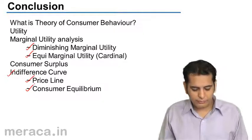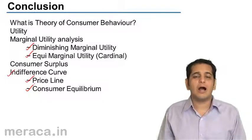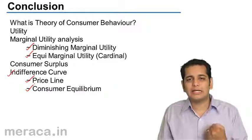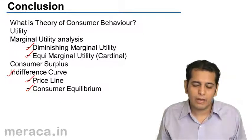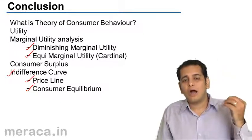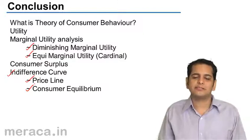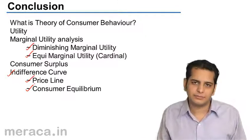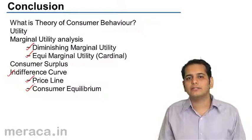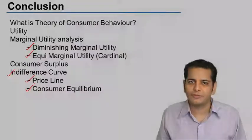And finally, we did consumer equilibrium — how a consumer reaches equilibrium, and how he knows how much he can consume to maximize his satisfaction while being within his budget. So this is what we've learned in the chapter: the theory of consumer behavior.